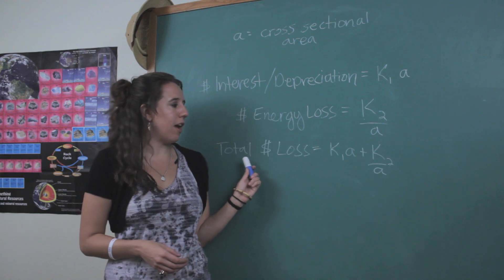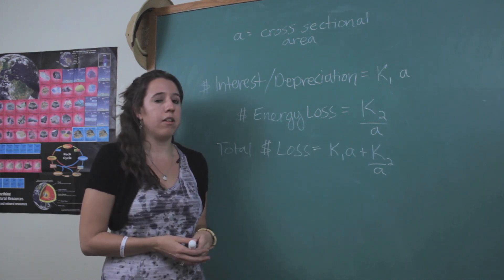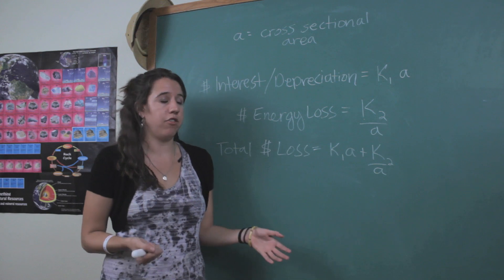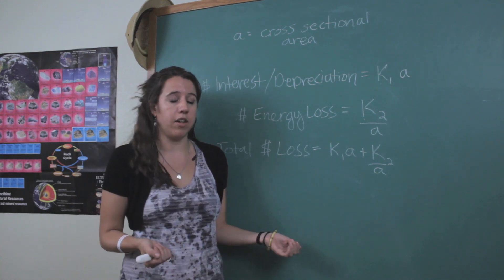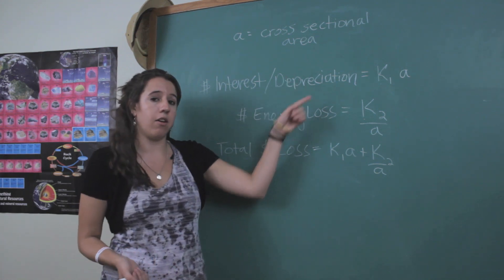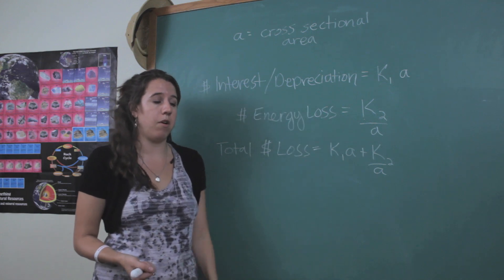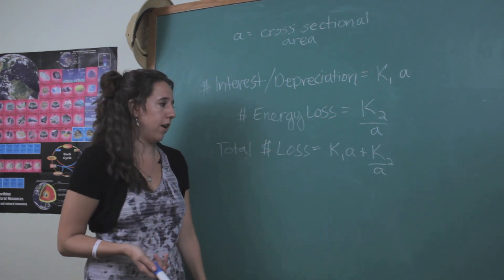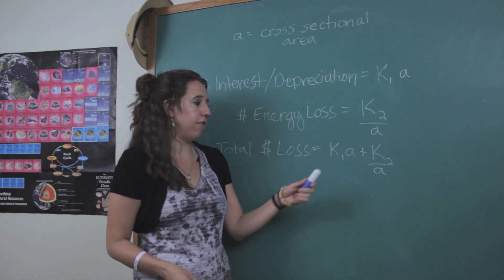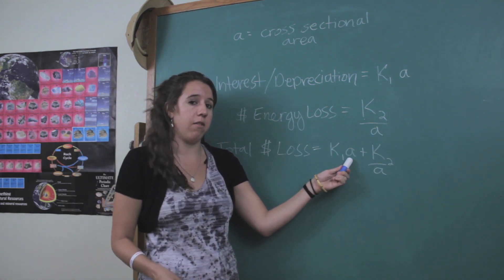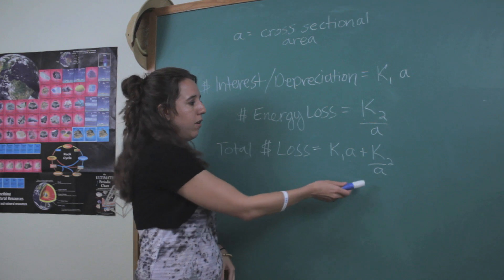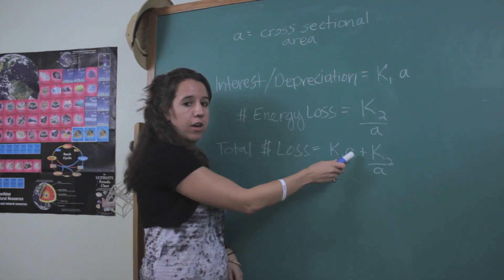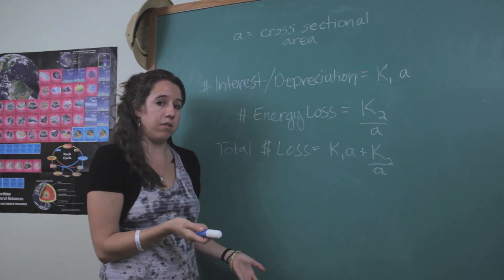So now that you have this number, you're going to use some calculus to figure out the most efficient cross-sectional area of the conductor, because again, you can't go too big or too small. So the full derivation is kind of out of our scope right now, but essentially to find the most efficient value of A, you're going to take the derivative of this quantity here and set it equal to zero.